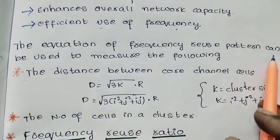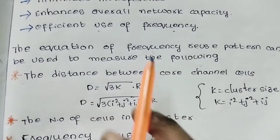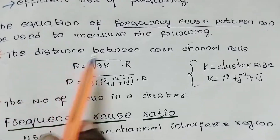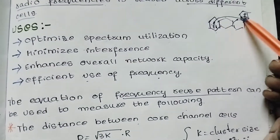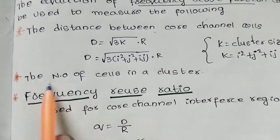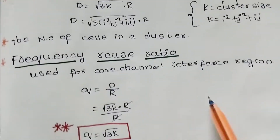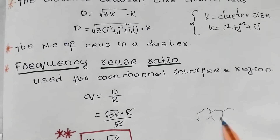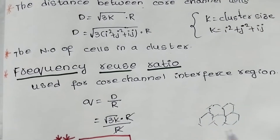The equation of frequency reuse pattern can be used to measure the following: we measure the distance between the co-channel cells. There is a co-channel, and there is a distance between the co-channel cells and the cluster.